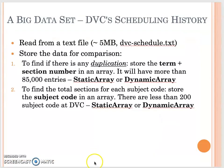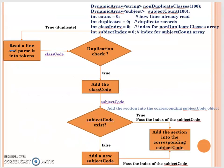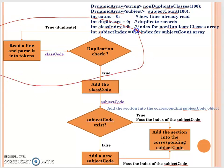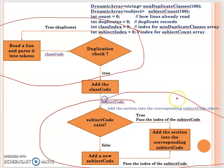To help understand how to work on this big data application, I made a flowchart. Each block in the flowchart, whether a condition or code block, represents a code segment we need to process. Our big data work has two parts: the first is the duplicate check, and the second is the subject code processing.